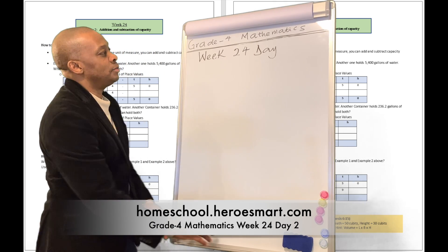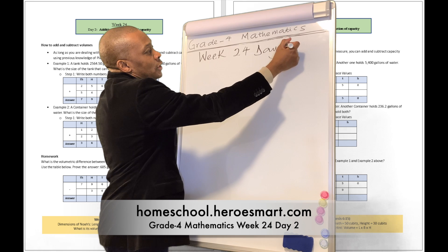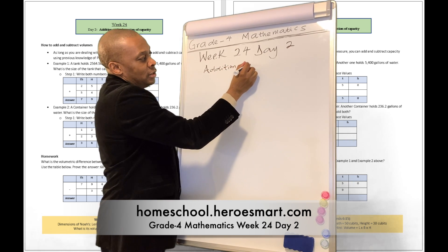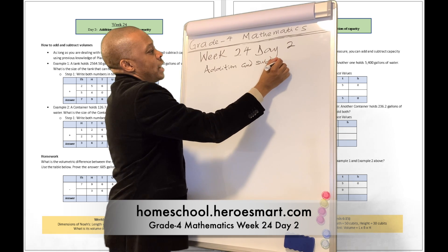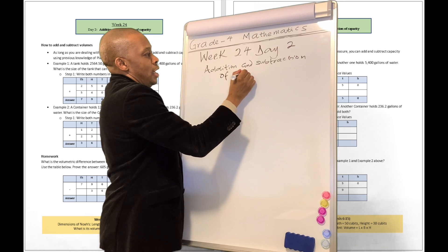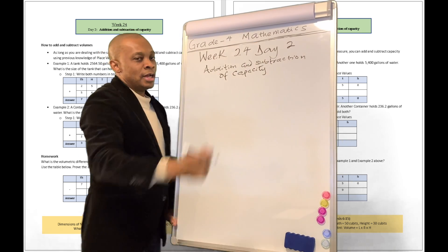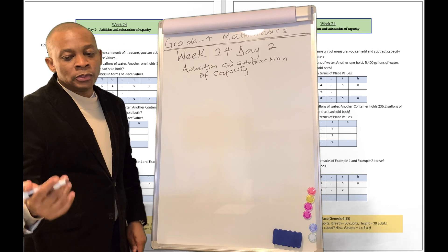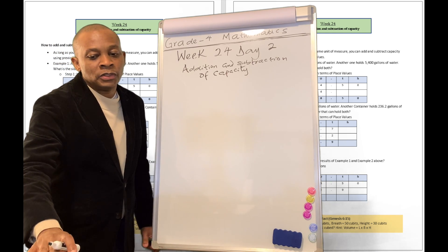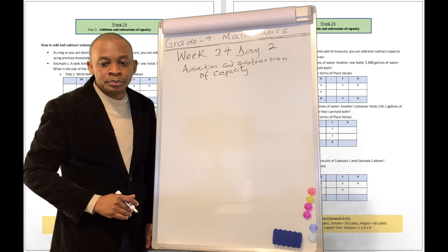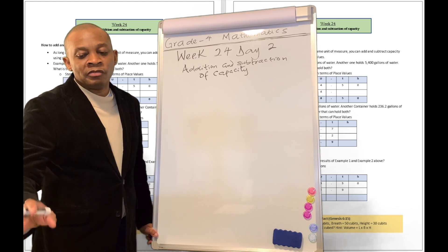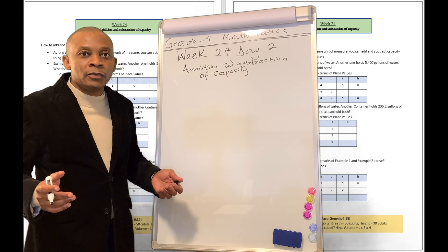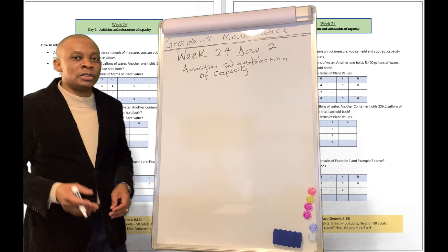We're going to try adding and subtracting capacities from each other. Addition and subtraction of capacity. Let's take a look at it. There's an exercise here which says a tank holds 2,564.50 gallons of water. Another tank holds 5,400 gallons of water. What is the size of the tank that can hold both? That's an easy problem. Just add it all together, right?